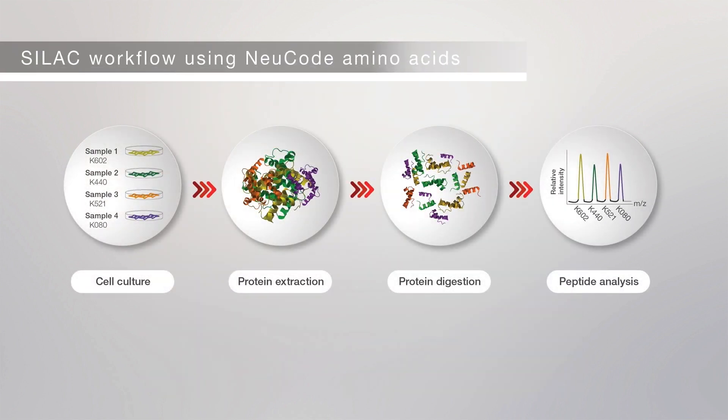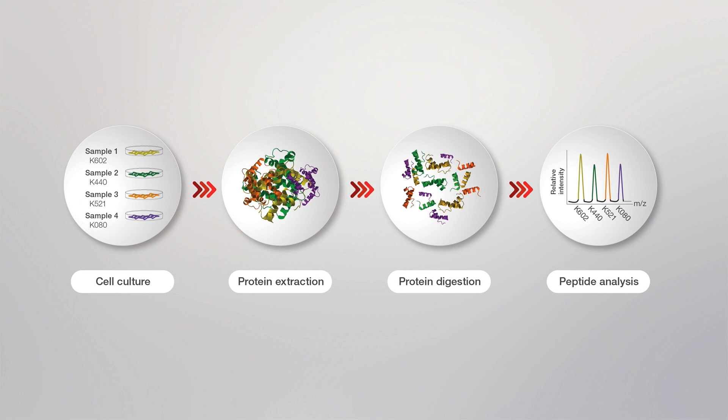Up to four different cell populations can be analyzed using ThermoScientific NeuCode amino acids. These heavy amino acids contain different stable isotope variants that can be analyzed using high-resolution mass spectrometry.